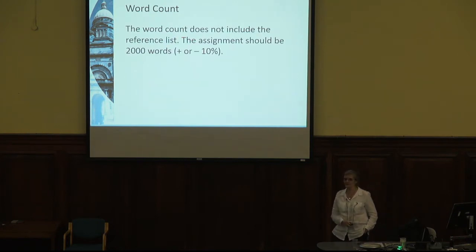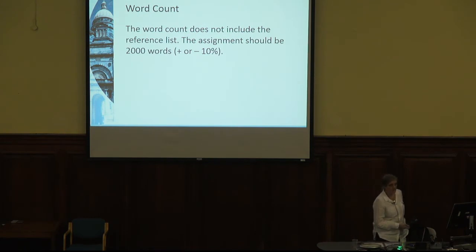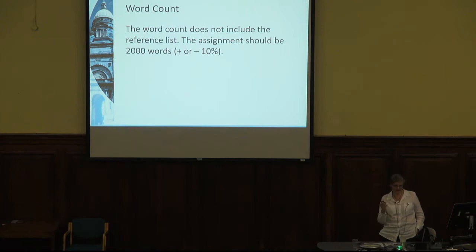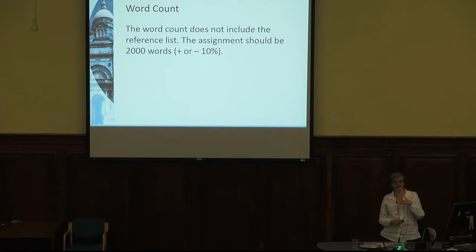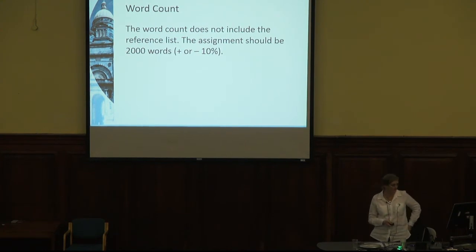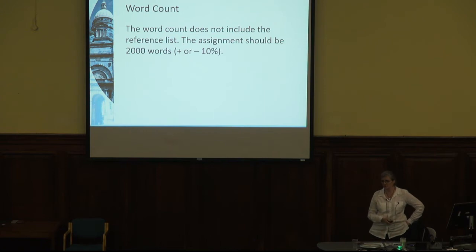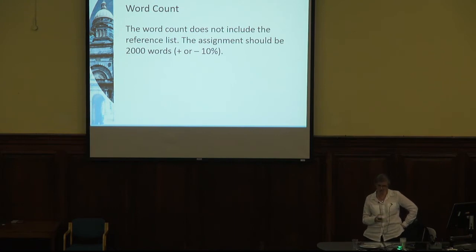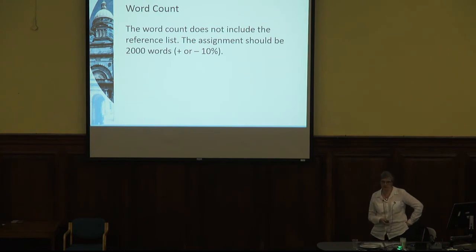The word count for the assignment does not include references — that means it does not include the reference list at the end of the paper. It does include any citations you make in-text or any direct quotes you use. There's also a flexibility of plus or minus 10%, so aim for 2,000 words. Nothing terrible will happen if it's 1,800 or 2,200. After that, academic staff will exercise judgment — usually if something is over length it's because the student isn't writing succinctly. You should be able to say everything you need to say in 2,000 words.